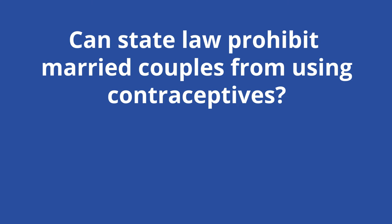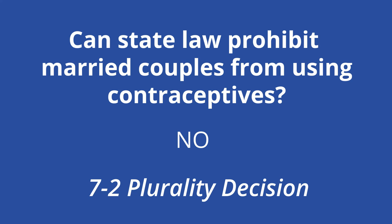When Griswold v. Connecticut reached the Supreme Court in 1965, more than 1 million American women were taking a birth control pill. In a 7-2 plurality decision, the court ruled that the Connecticut law violated the right to privacy by forbidding married people from using birth control.